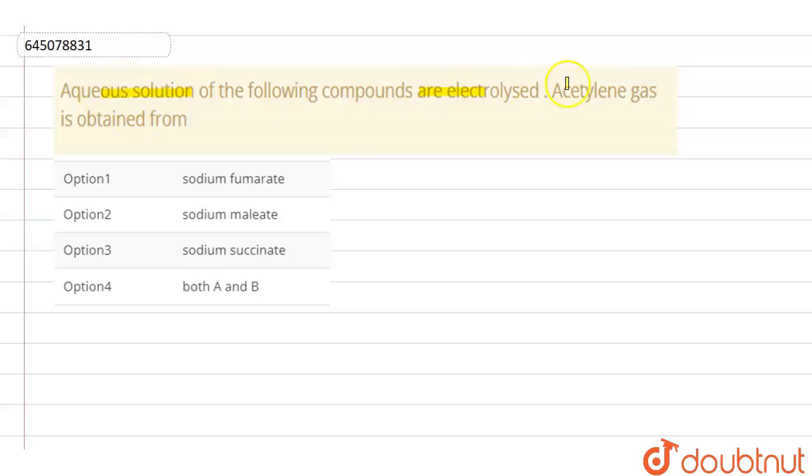In this question, we have to find out if aqueous solution of a compound is electrolyzed, then acetylene gas is formed. Now what is acetylene? That is CH triple bond CH. So the first compound is sodium fumarate.